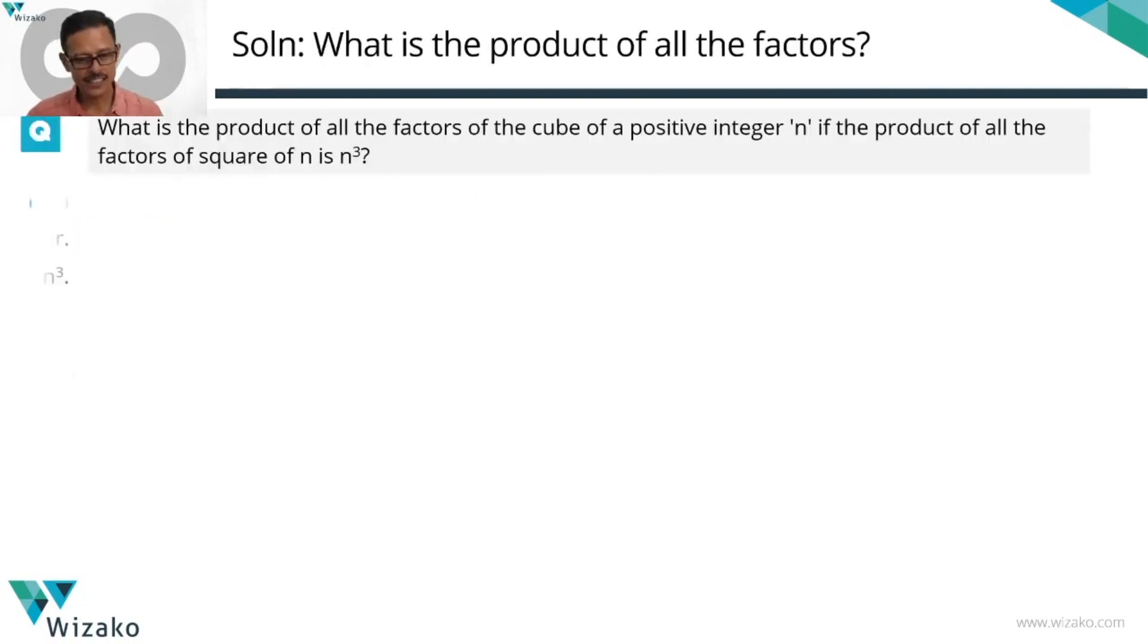First data: n is a positive integer. That's very key. Second data is the product of the factors of n square is n cube. n square, what are all the factors of n square? Definitely n square is a factor of n square. 1 is a factor of any of these numbers. We also know that n is a factor of n square. No doubt there at all. There could be more factors.